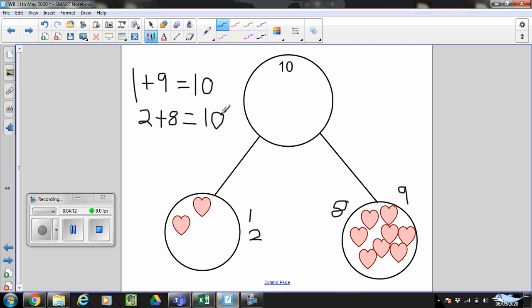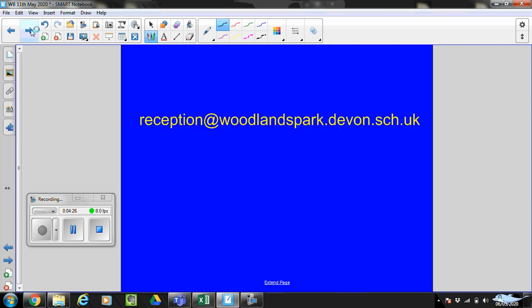Today we have done two ways together. So two ways of making 10. And your challenge now is to see how many more ways you can find using your part-part-whole and your 10 objects. I want to see how many ways you can find. And then I'm going to ask a grown-up to send in the photos of you doing that, or a little comment to say how you have got on.